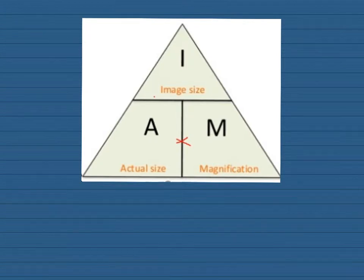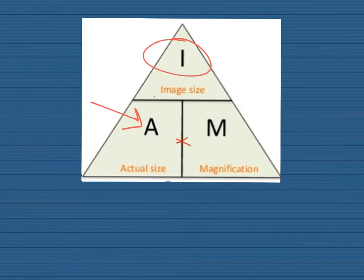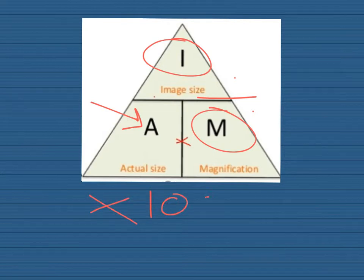You'll need to know how to use microscopes and also understand how to do calculations. This is what I call the IAM triangle. To find the image size, you take the actual size and multiply it by the magnification. To find the actual size, you take the image size and divide it by the magnification. A key thing to remember is that you're doing measurements in millimetres, and to convert to micrometres you always multiply your answer by a thousand. There is a video in Dr. Biology that goes into this in more detail with some exam questions to help with your revision.